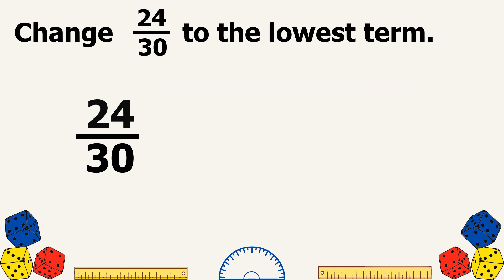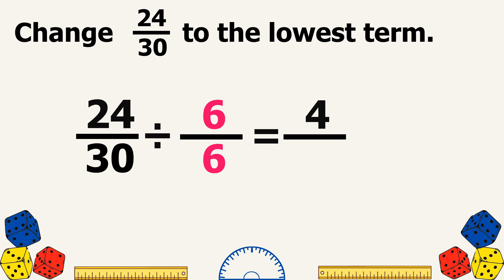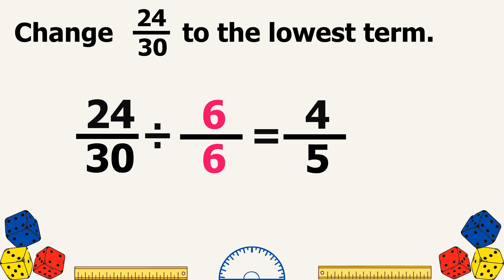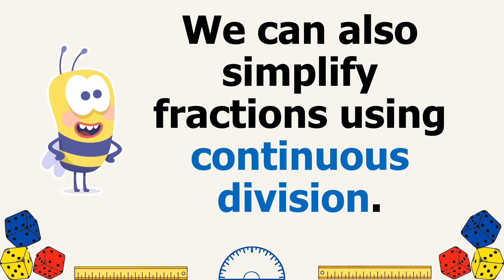So let us divide both by 6. 24 divided by 6 equals 4. 30 divided by 6 equals 5. So the lowest term of 24 over 30 is 4 fifths.